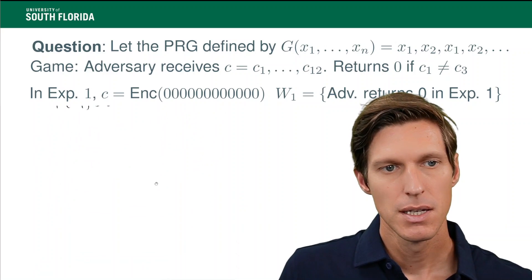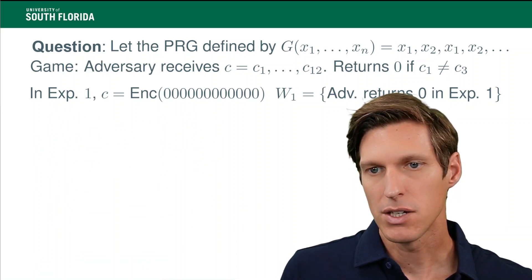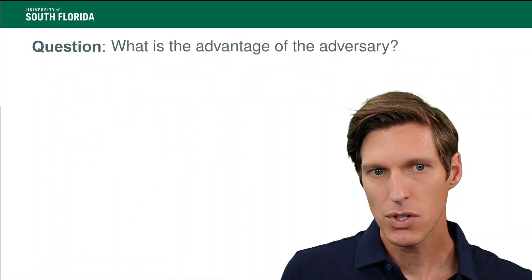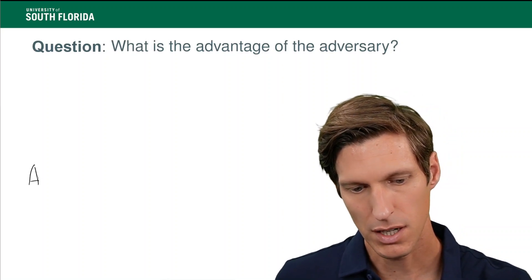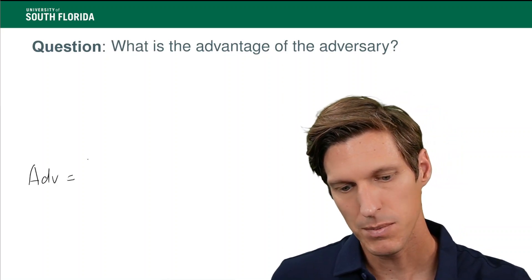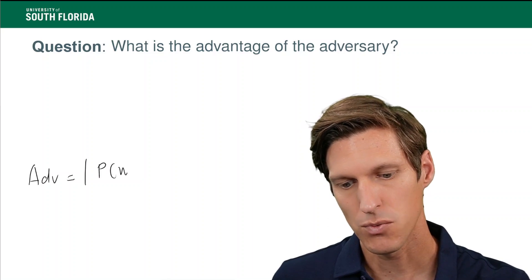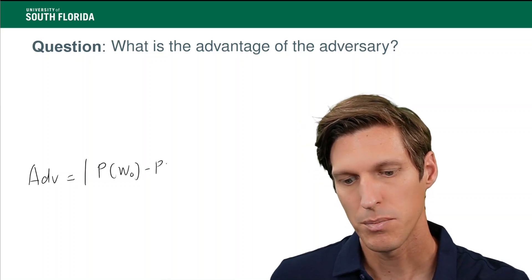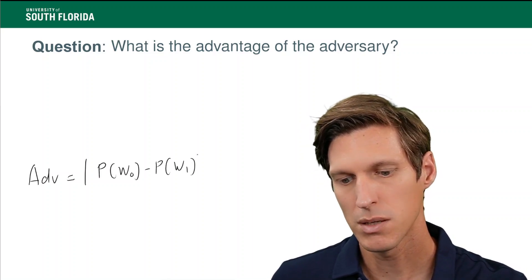So with that in mind, how do we calculate the advantage of that adversary? So what's my advantage? The advantage of the adversary is the absolute value of the difference between those two probabilities, p of w1 and w0.